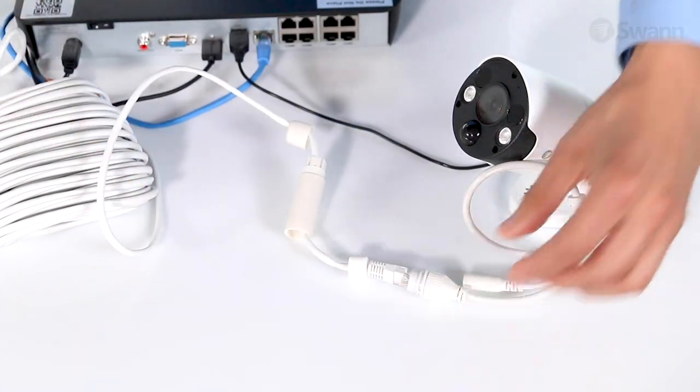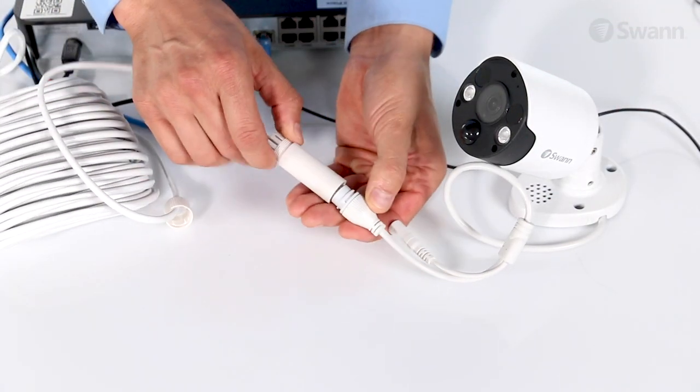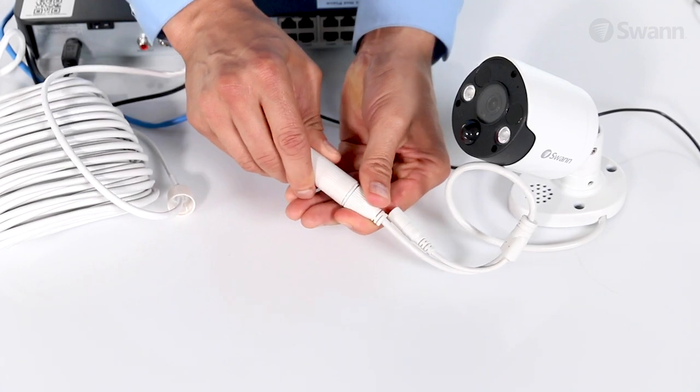Connect the Ethernet cable to the camera's connector. Then, slide the large barrel connector up the line and twist it to secure it in place.